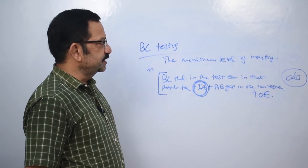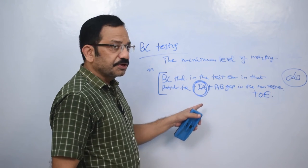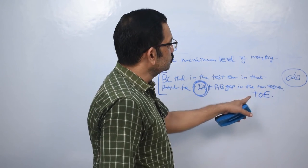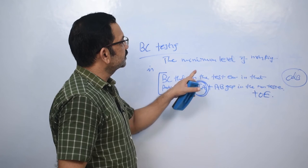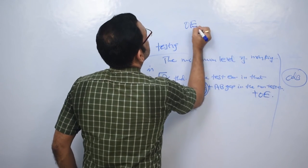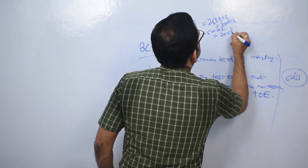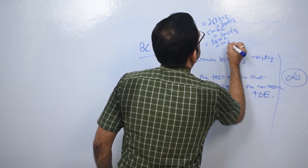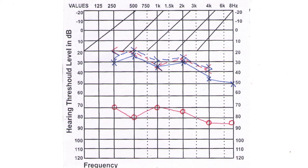For bone conduction testing, the minimum level of masking using headphones is the BC threshold in the non-test ear plus the occlusion effect. Since interaural attenuation is 0 in BC testing, the minimum masking level is: BC threshold in the test ear plus AB gap in the non-test ear plus occlusion effect. Please remember that the occlusion effect at 250 Hz is 30 dB, at 500 Hz it is 20 dB, at 1 kilohertz it is 10 dB, and beyond 1 kilohertz there is no occlusion effect. Therefore, the minimum bone conduction masking level at 1 kilohertz is 35 dB plus 5 dB plus 10 dB, which equals 50 dB.